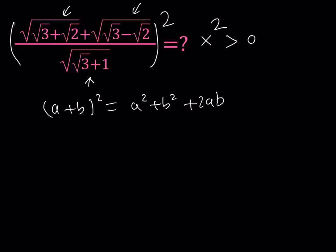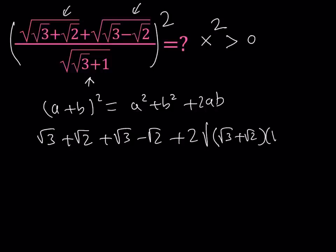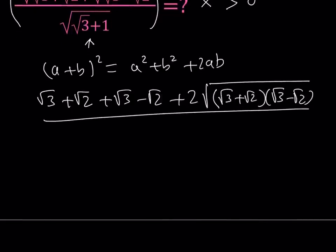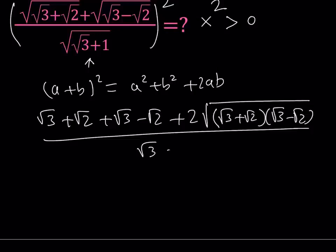That's going to give you, of course, the outer square root is going to disappear. Here, we're going to get a squared plus b squared plus 2 times the square root of root 3 plus root 2 multiplied by root 3 minus root 2. And all of that is going to be divided by the bottom expression squared, and that's going to equal square root of 3 plus 1.